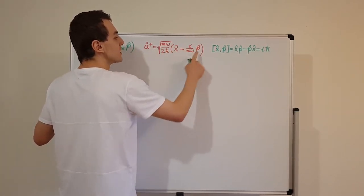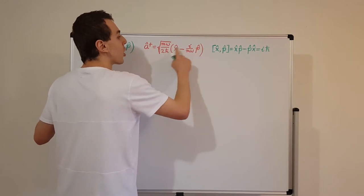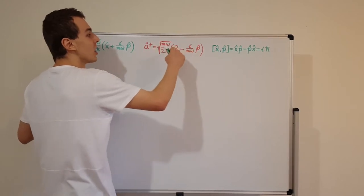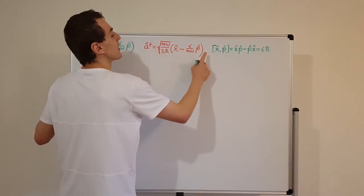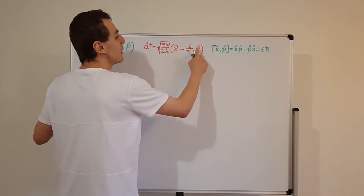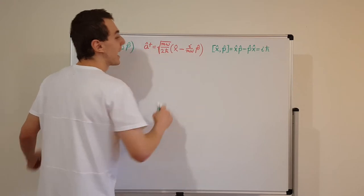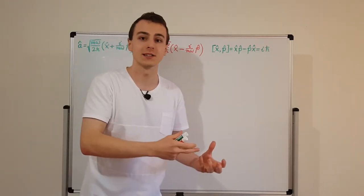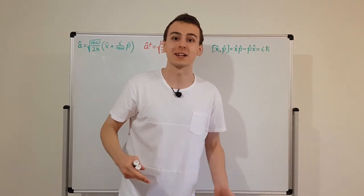All of these other constants are real numbers, and position and momentum are Hermitian. So if we take the Hermitian adjoint of these operators, we get the same thing. So x is equal to x dagger, and p is equal to p dagger. These are Hermitian and they actually correspond to observable quantities — position and momentum are observable quantities in quantum mechanics.